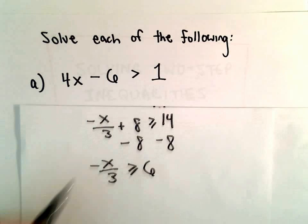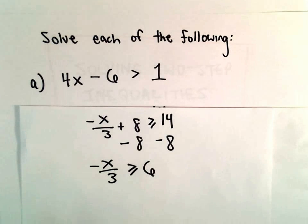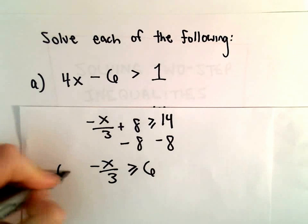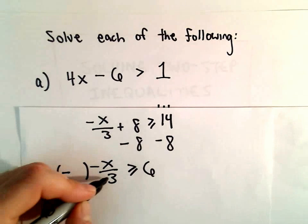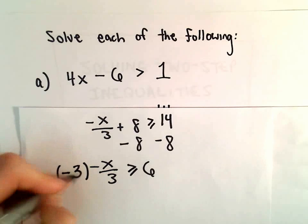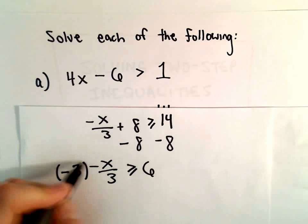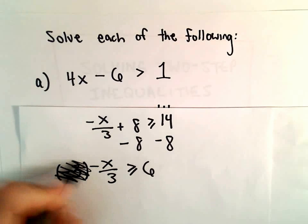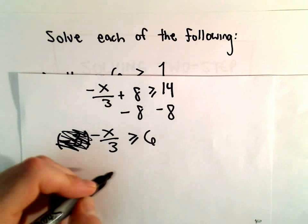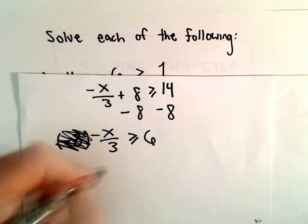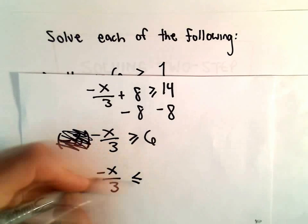Now, to get rid of the negative and the 3 in the denominator, I could multiply both sides by negative 1 to get rid of the negative, and since I'm dividing by 3, I'm going to also multiply by 3. Since I'm multiplying by a negative number, the inequality should flip.